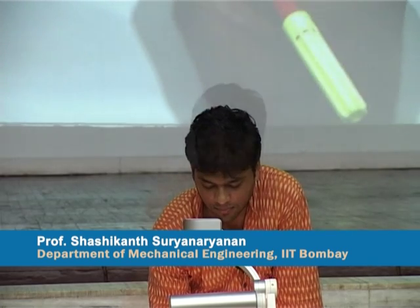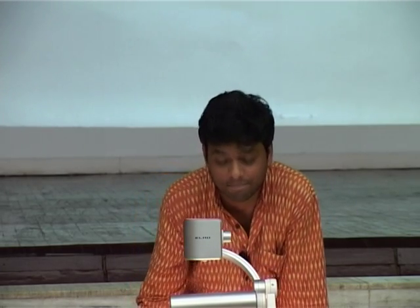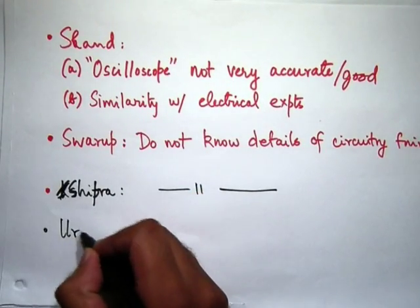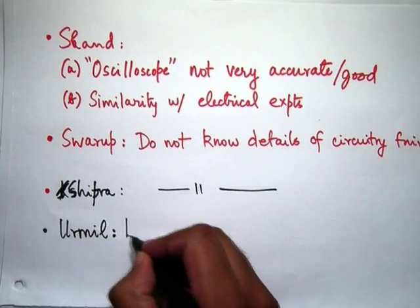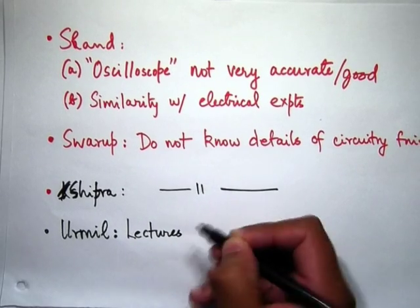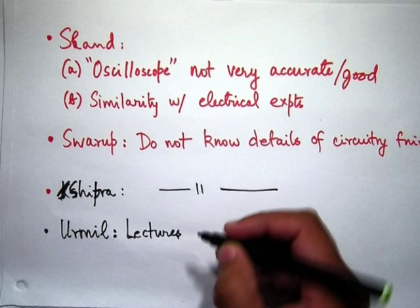Student Swaroop: We don't know what is happening inside the circuit. For example, an IC has many components and the function of each is not clear — the theory and basics are not clear. Another student says their concerns are only logistical: fewer TAs and unclear grading scheme — no content concerns. Student Shipra: Not very clear about electrical circuits and how they work.